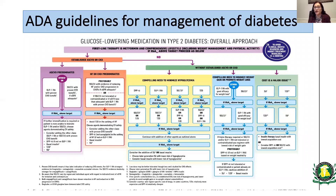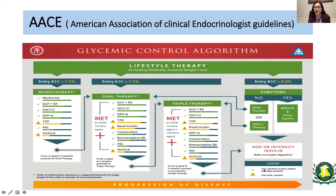The ADA guidelines until recently mainly emphasized using oral medications first, followed by injectables, and are more cost-based — cheaper medications are advised first. However, in 2019 these guidelines were revised and ADA now has a more similar approach to ACE guidelines. The ACE guidelines are based more on disease progression and presence or absence of cardiovascular disease and other comorbidities. Both guidelines start with lifestyle modification; the first-line agent for both is metformin. However, the ACE second-line agent is GLP, an injectable medication. Both ADA and ACE recommend insulin treatment when hemoglobin A1c at diagnosis is more than nine.